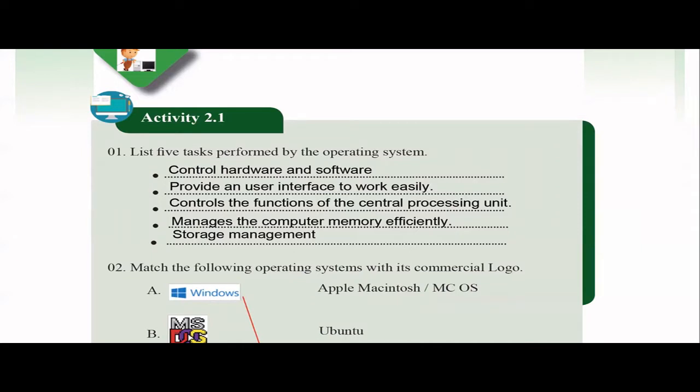The operating system controls hardware and software. It provides a user interface where a user can interact with the computer, and it controls the functions of the central processing unit. All the hardware and software is managed by the operating system. It also manages computer memory, storage management, file management, security-related management, and network-related management. So the operating system is actually performing so many tasks in the computer.